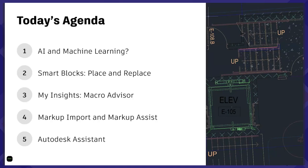We'll be looking at smart blocks - there are two functions: place and replace. There's also a macro advisor which we can look at. And then John is going to take over and show you some markup import and markup assist, and some stuff for the Autodesk assistant, which he's going to do live, which could be interesting.